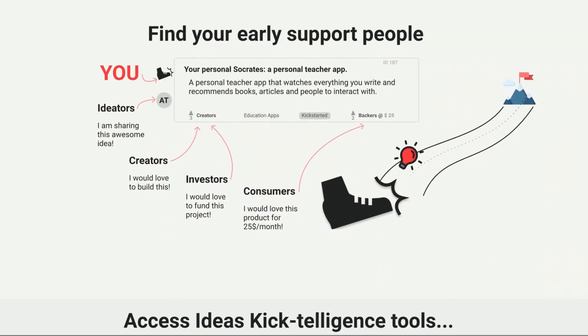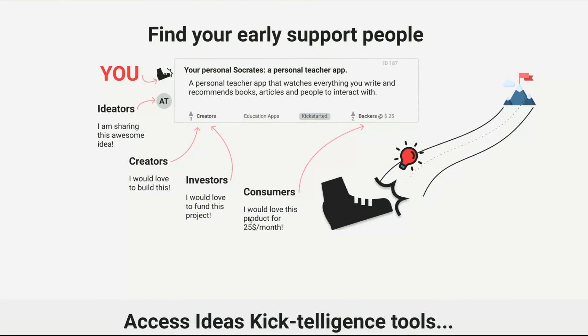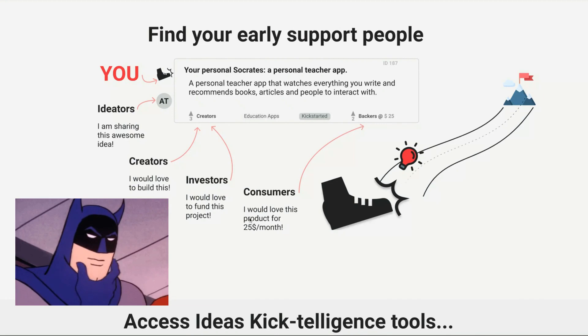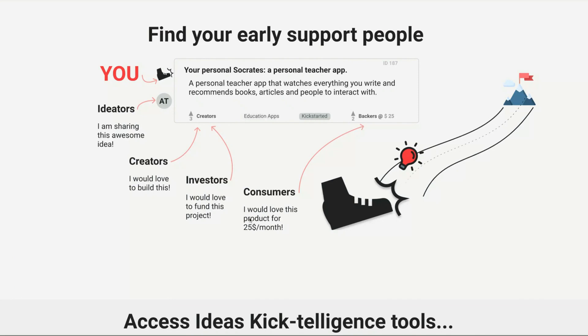Scrolling down, you're basically telling me what this is about — 'find your early support people.' You're basically saying you want to find people that will support your ideas. I'm going to refrain from commenting on how you do this and just stick to what I see. There's a lot going on here — I feel like you can break down this image and this process into multiple pieces.